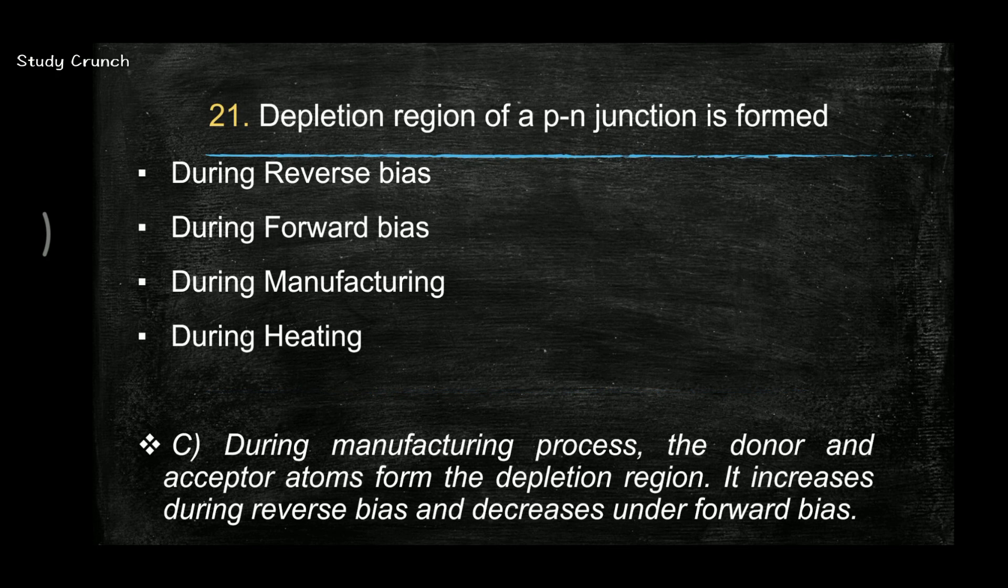The question is: depletion region of PN junction is formed by reverse biasing, forward biasing, manufacturing, or during heating. So the answer is the PN junction is formed during the manufacturing. The donor and the acceptor atoms form the depletion region. It increases during reverse bias and decreases under forward bias.